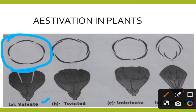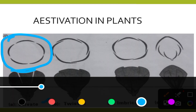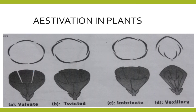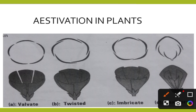Next, coming to twisted aestivation. In twisted aestivation, the petals overlap one another — one end is outside and one end is inside, as you can see in the diagram. One petal overlaps on another petal or sepal at one end. Plants like ladies' fingers and hibiscus show this twisted type of aestivation.